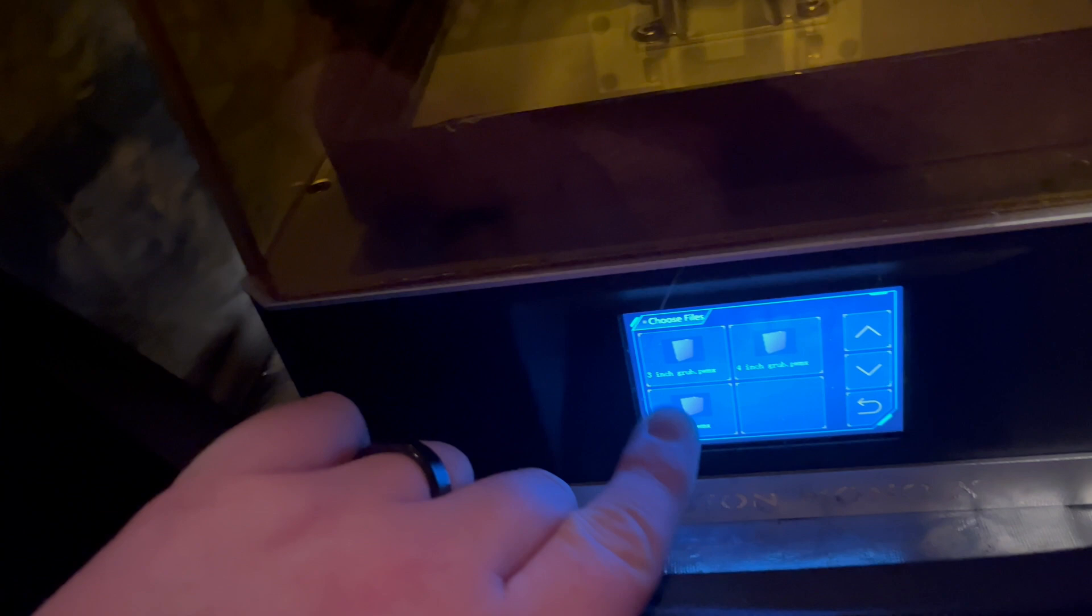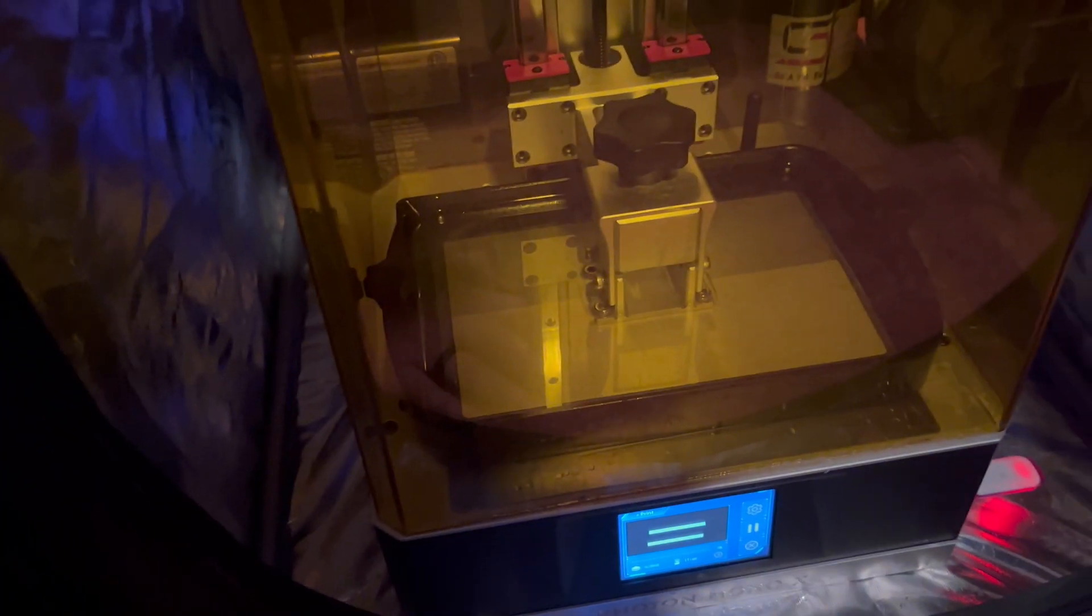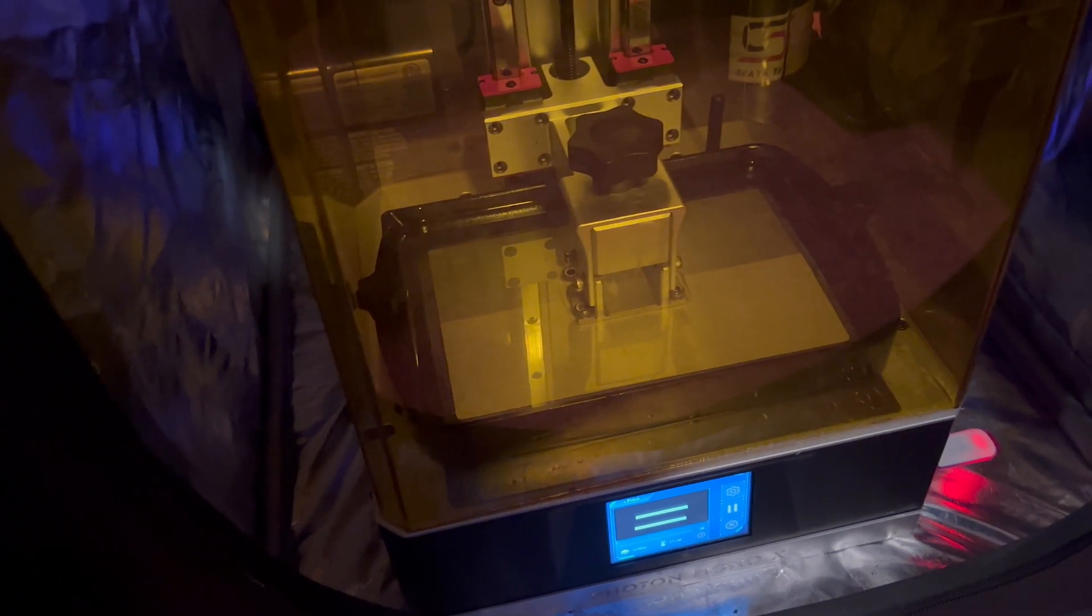Right now we have our machine ready to go. I already pre-warmed it and made sure my bed's level. We also have our spare bottle of resin in the back heating up too. We're doing the three-inch grub right now and we're going to press print. This machine is going to start going now. We are going to have to top this off and fill up this resin vat a little bit more in the middle of the print. I'm going to jump back in when that happens and show you guys how that works.